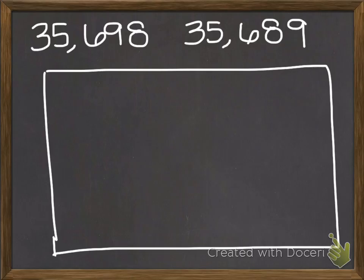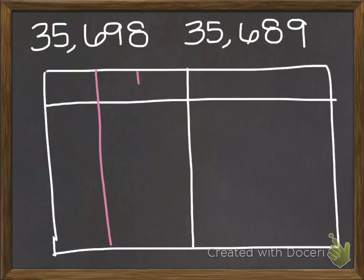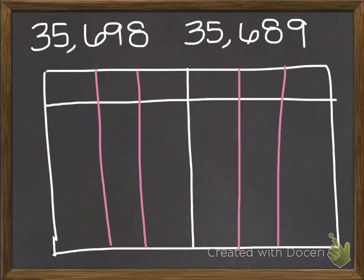In this problem we are going to compare 35,698 to 35,689. We're trying to figure out how these numbers compare to each other. I always start by making a rectangle and then drawing my place value chart. The first thing I do is divide the chart in half for my thousands period and my units period. Then I remember that each one needs three columns, so now I have three columns for my thousands period and three for my units.